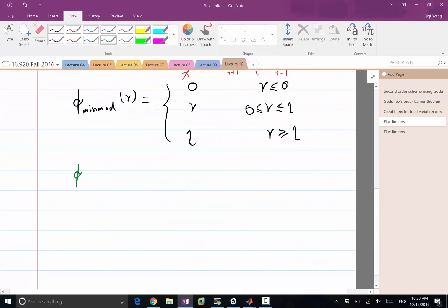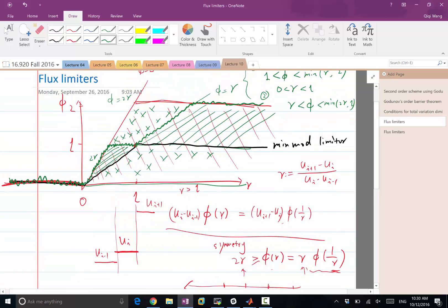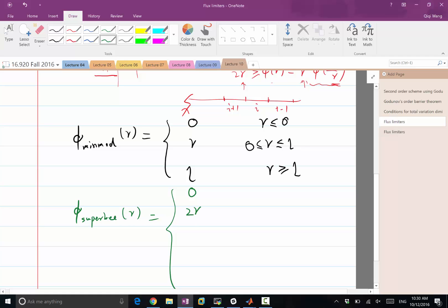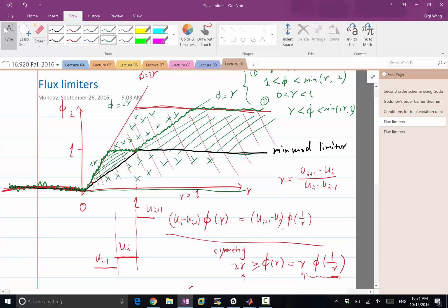So this limiter is called a super-b. It has five cases. It is either 0, in this range is 2r, in this range is 1, in this range is r, and 2. So it can be 0 or 2r, or 1 or r or 2, depending on if r is greater than 0, or r is in between 0 and half, or when r is between half and 1, and if r is between 1 and 2, and r greater than 2. All right. So this is tracing the upper contour of this allowable region.